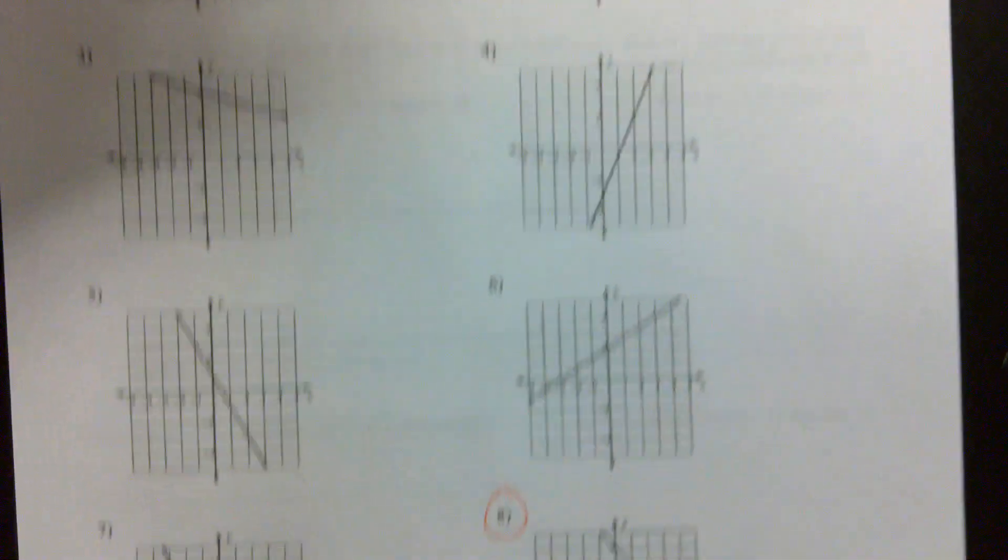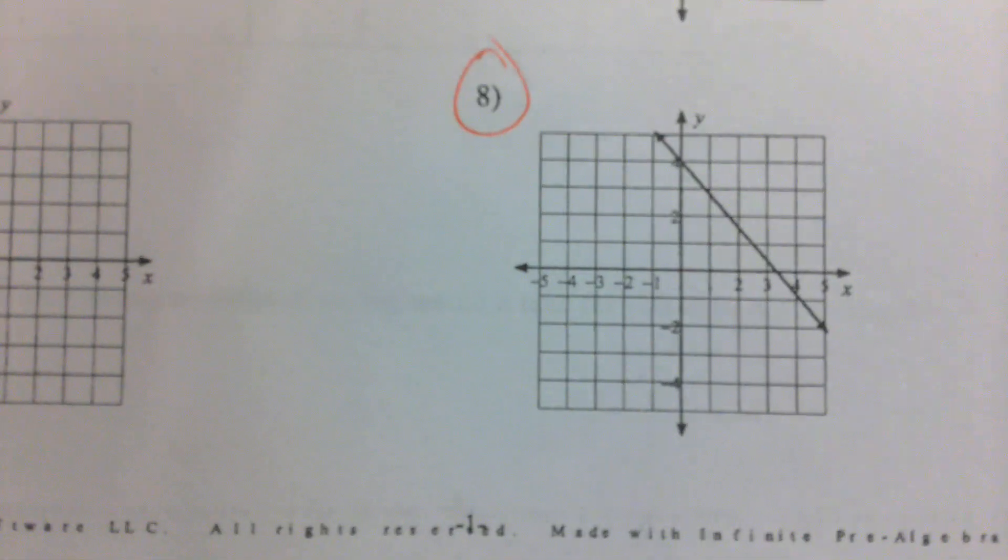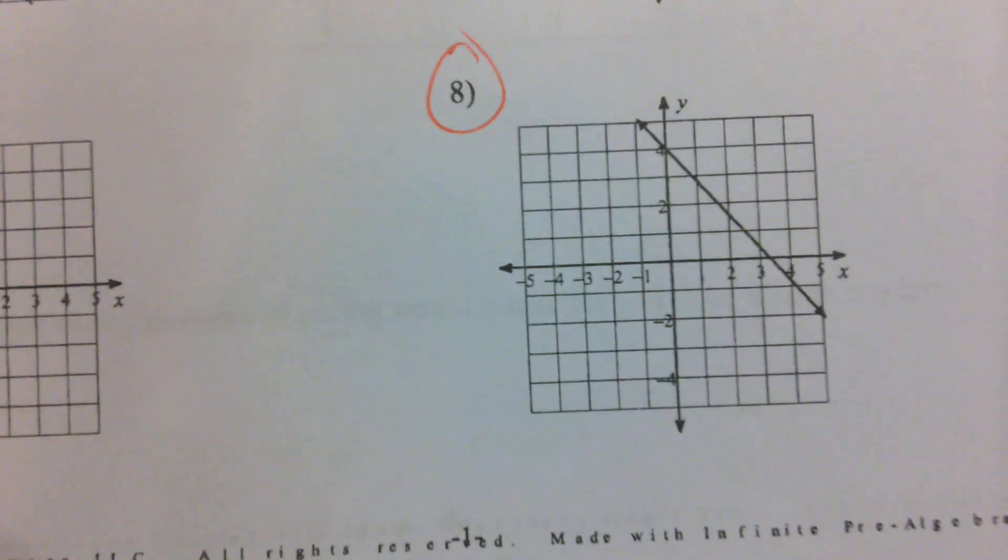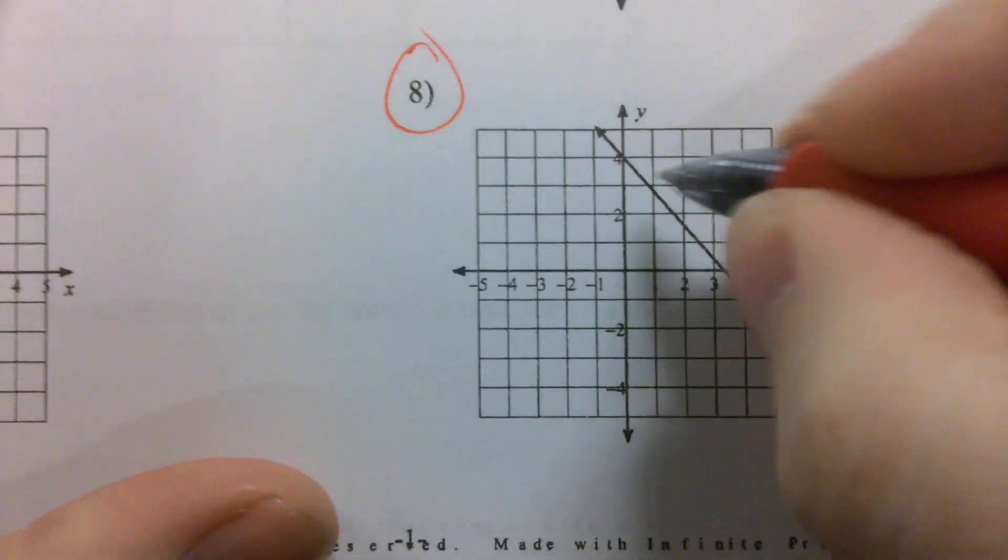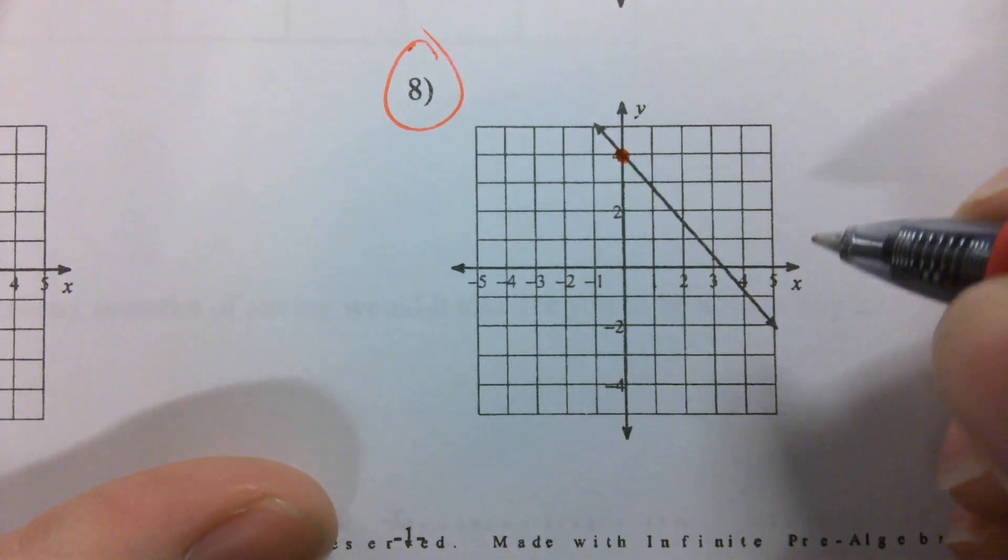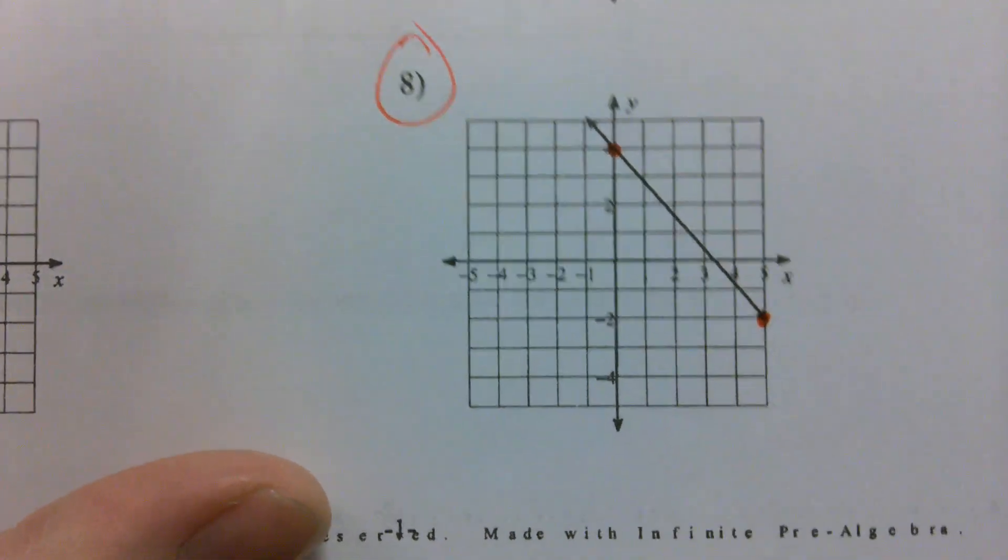So, on the front, F04, starting out with number eight. Now, obviously there's no points on here, but we drew these in on Thursday. Got a point right there, a point down there.